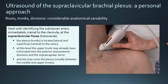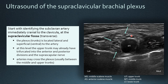Now I will show you my personal approach. I start at the supraclavicular fossa, immediately cranial to the clavicula. In this region, the first landmark you have to identify is the subclavian artery, because the plexus is located immediately lateral and superficial — or ventral — to the subclavian artery. Within the plexus, the deepest part is the lower trunk, immediately at the corner between the first rib and the subclavian artery.